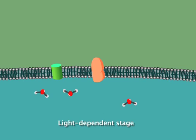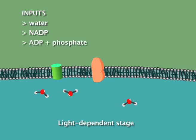Let's review the inputs and outputs. The input materials are water, the uncharged form of the carrier NADP, ADP and phosphate groups. The other essential inputs are light energy and chlorophyll.